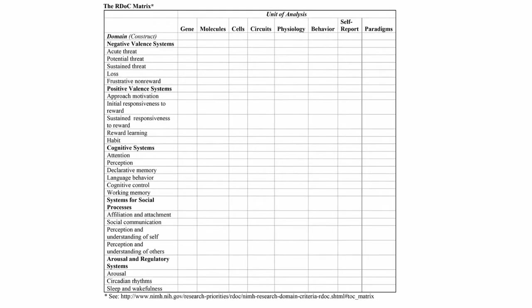Here is the RDoC matrix. The domains, constructs, and sub-constructs are on the left side of the matrix. In absolute layman's terms, these are characteristics of brain functioning, such as how a brain responds to fear, how a brain responds to threat, how do you visually perceive images, how are your sleep cycles, etc.